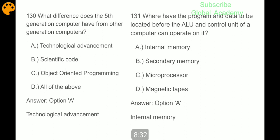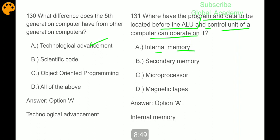What difference does the fifth generation computer have from other generation computers? Technological advancement. Where do the program and data need to be located before the ALU and control unit of a computer can operate on it? In internal memory.